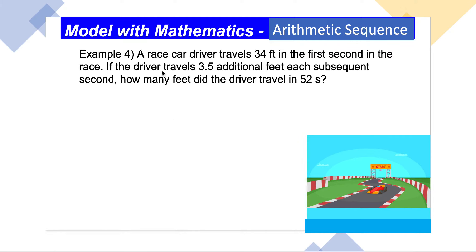Arithmetic sequence. A race car driver travels 34 feet in the first second in the race. If the driver travels 3.5 additional feet each subsequent second, how many feet did the driver travel in 52 seconds?